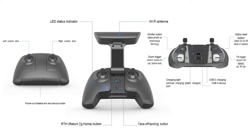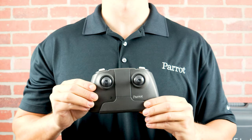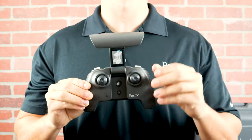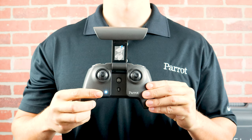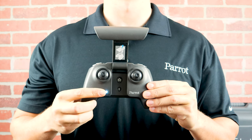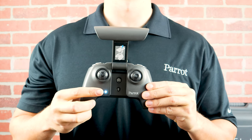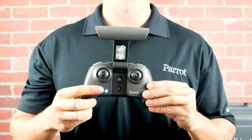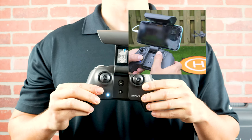To begin, let's go through the controls on the SkyController 3. Power on the SkyController 3 by opening it up. The LED will indicate the system is powered on and looking for the aircraft.